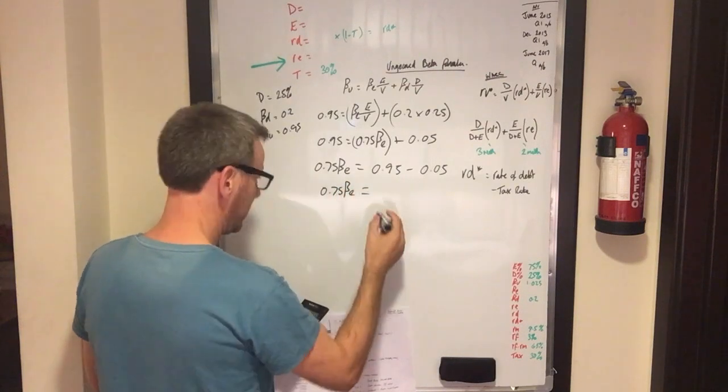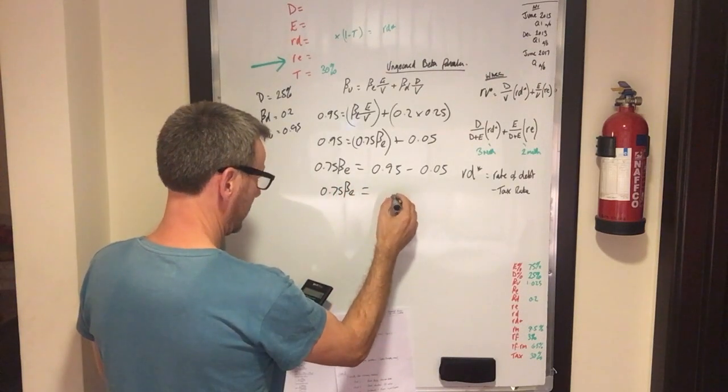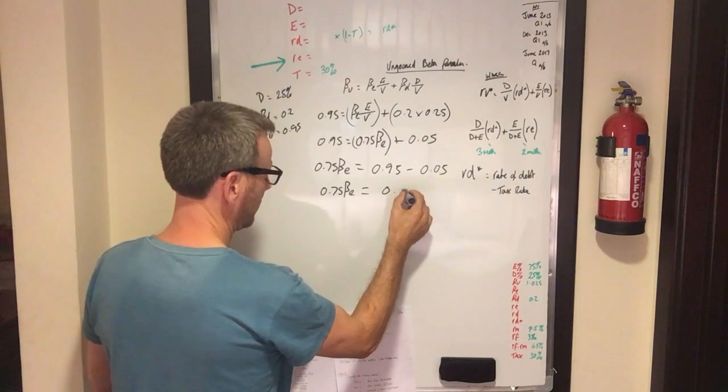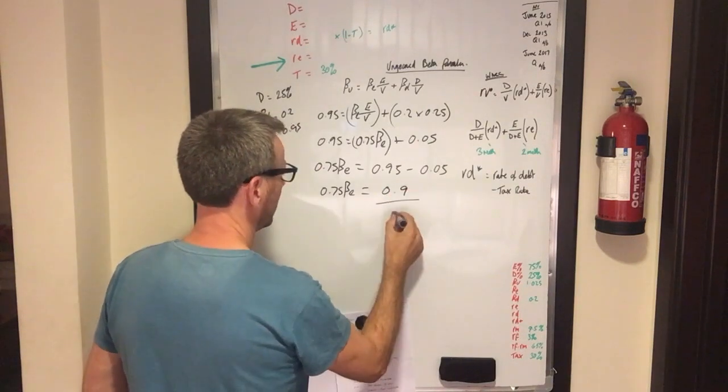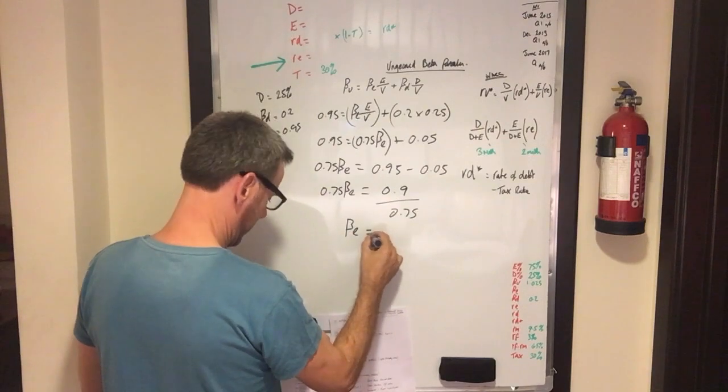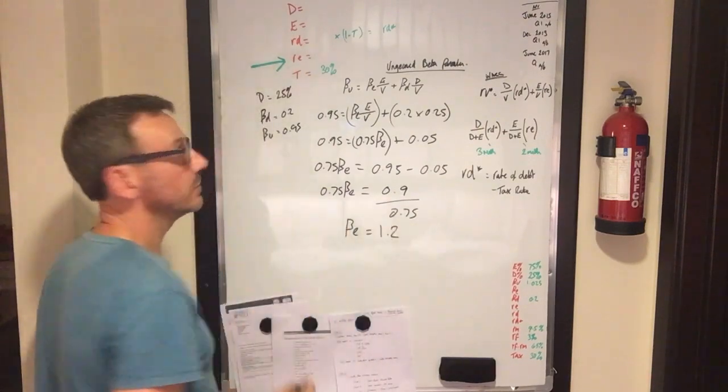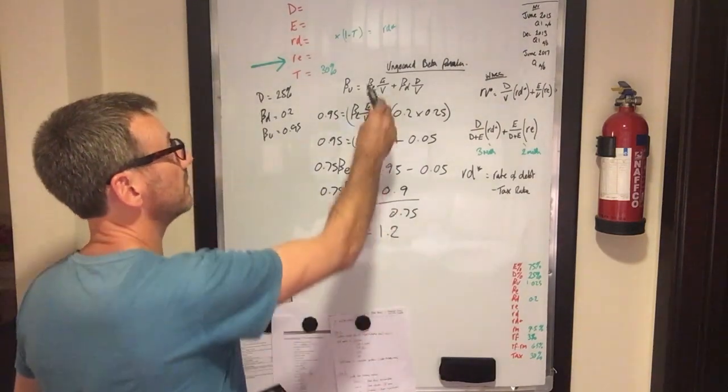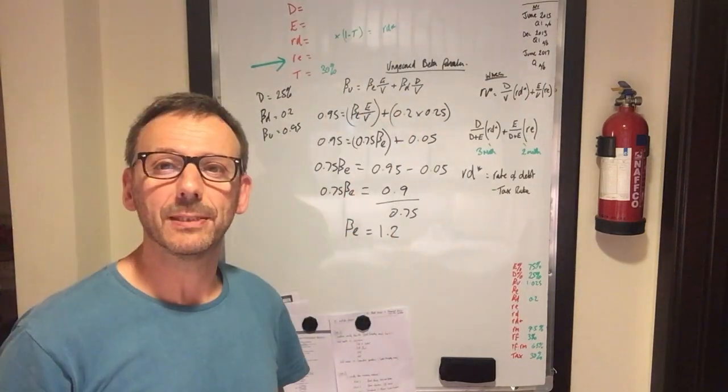It's a beta equity of 1.2. Simple way to use the ungeared beta formula to calculate the beta equity.